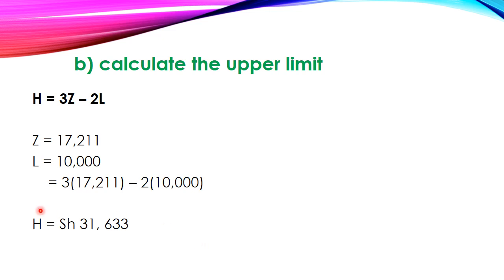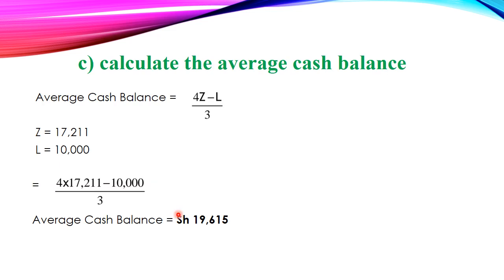Part B: calculate the upper limit. H is given by 3Z minus 2L. We already have our Z, the target cash balance, which is 17,211 shillings, and our lower limit L is 10,000 shillings. Substituting into the formula: H equals 3 × 17,211 minus 2 × 10,000, which gives an upper limit of 31,633 shillings.